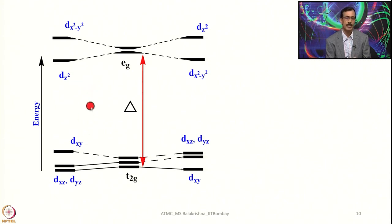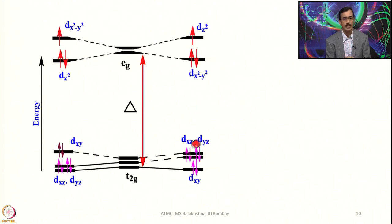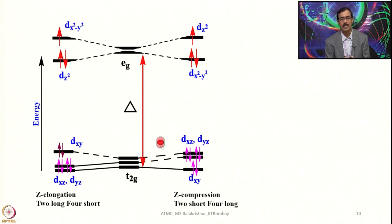We refer to these as z-elongation (2 long bonds and 4 short bonds) and z-compression (4 long bonds and 2 short bonds). In z-elongation, the axial ligands are pulled outward and the in-plane ligands come closer; in z-compression, the axial ligands come closer and the in-plane ones expand.